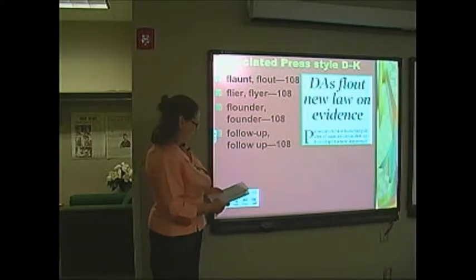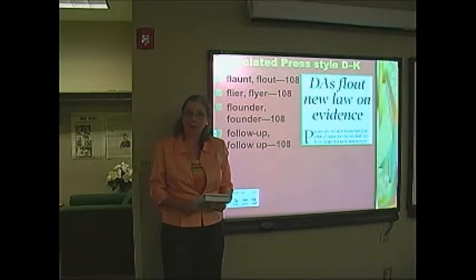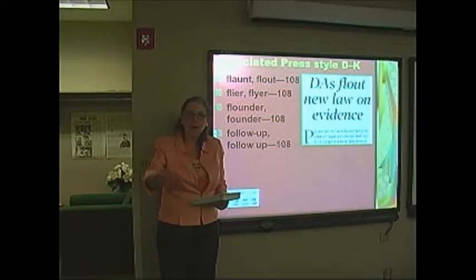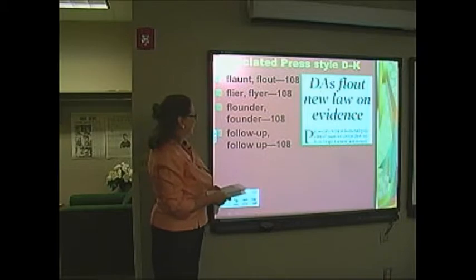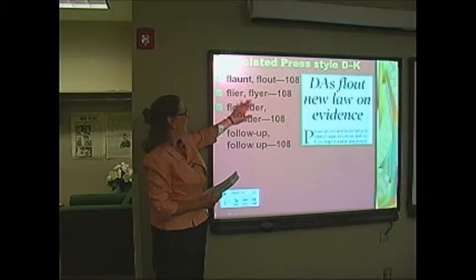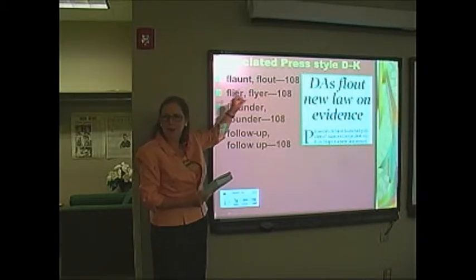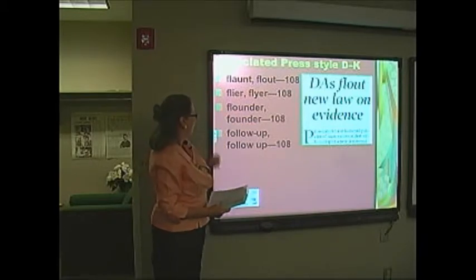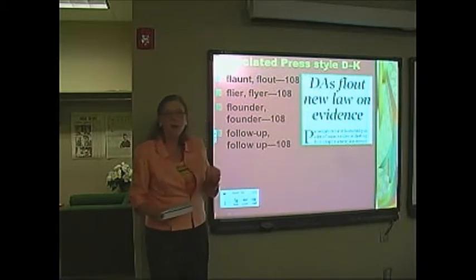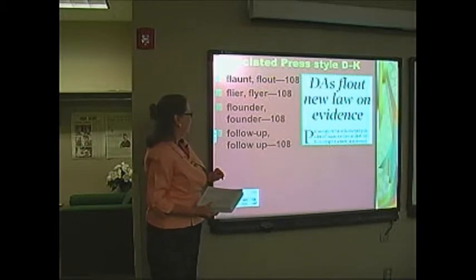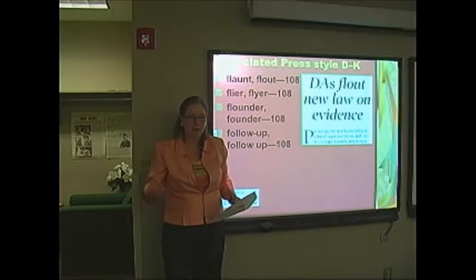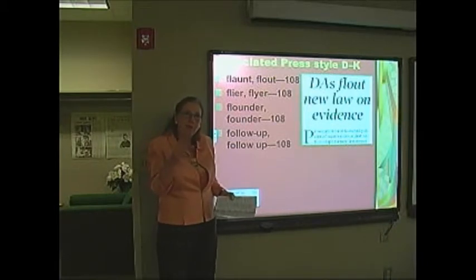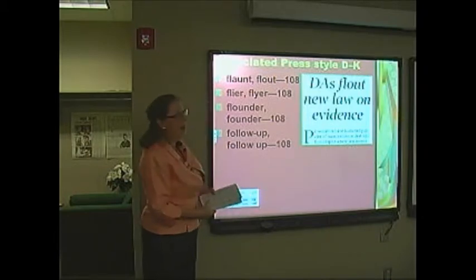Flyer and flier — this is probably in the top 20 of misused words. That handbill you see people distributing in a parking lot is a flier — F-L-I-E-R — and that spelling is for an aviator too; think of the root word. Flounder and founder: people who grew up on farms know the difference. Founder is when an animal gets bogged down; flounder means to flop around. Technically a horse could flounder and then founder. And of course there's a big fish named Flounder.